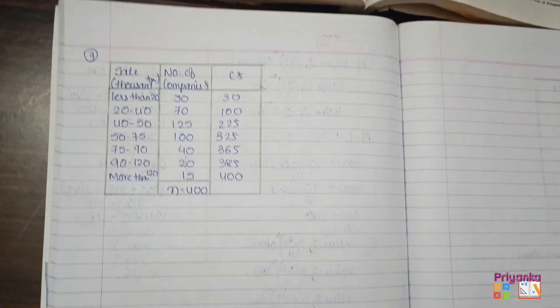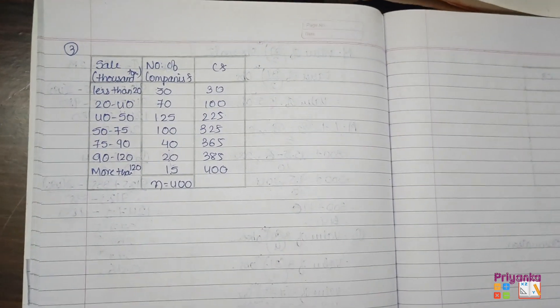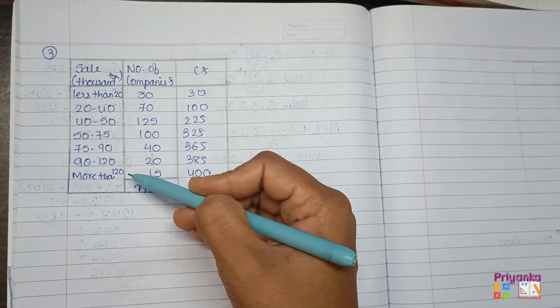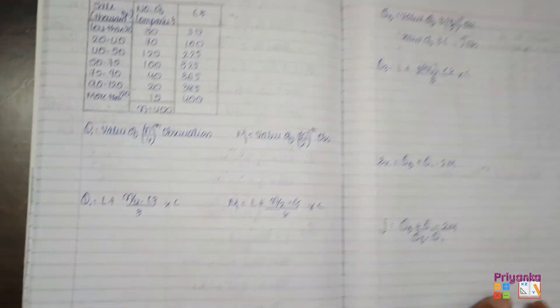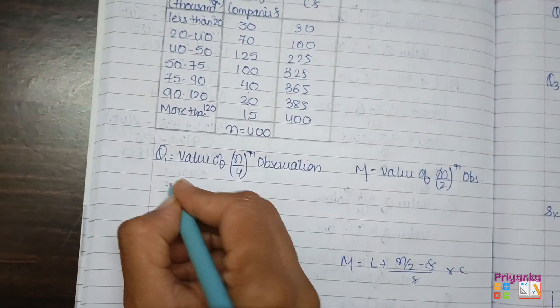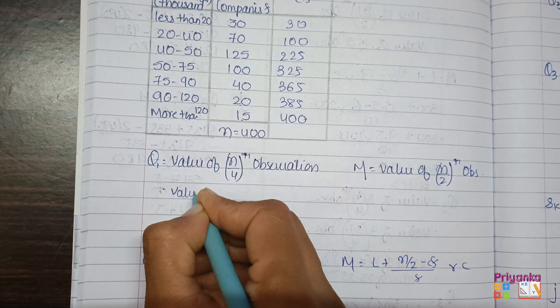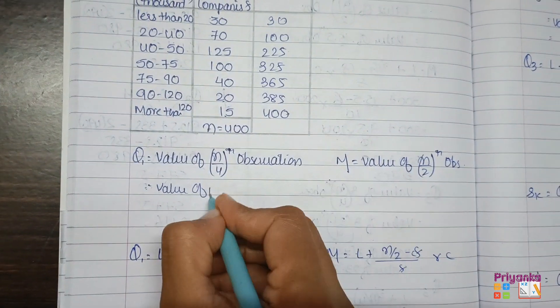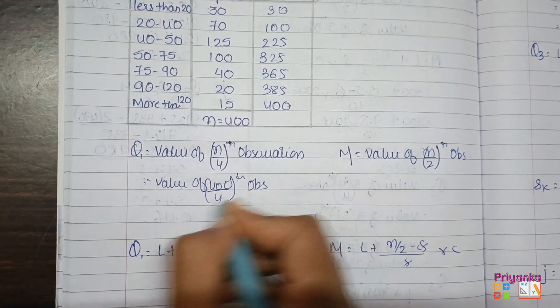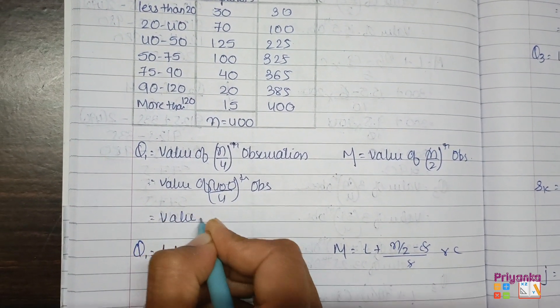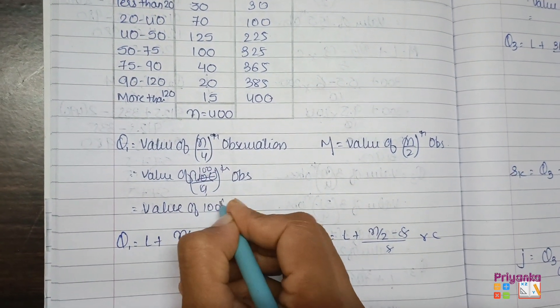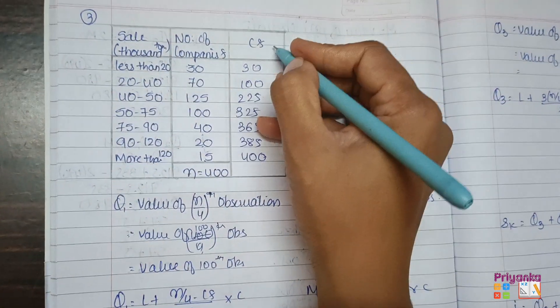Next, just to find out Q1, Q median, and Q3. As it is a continuous frequency distribution, we will use the big formula. I am ready with the formula which we have already solved. So this is easy to be solved. So here we will write down the value of N, that is 400 divided by 4th observation, which will be the value of 100th observation.